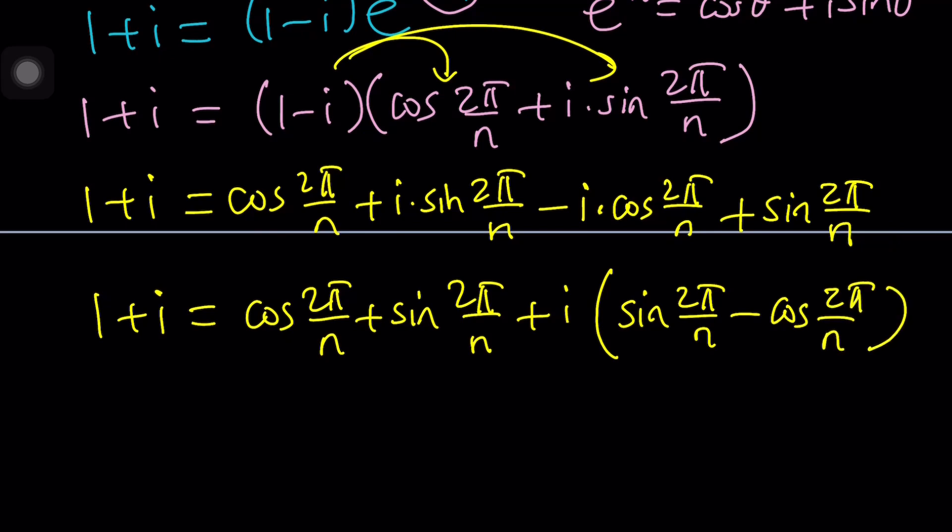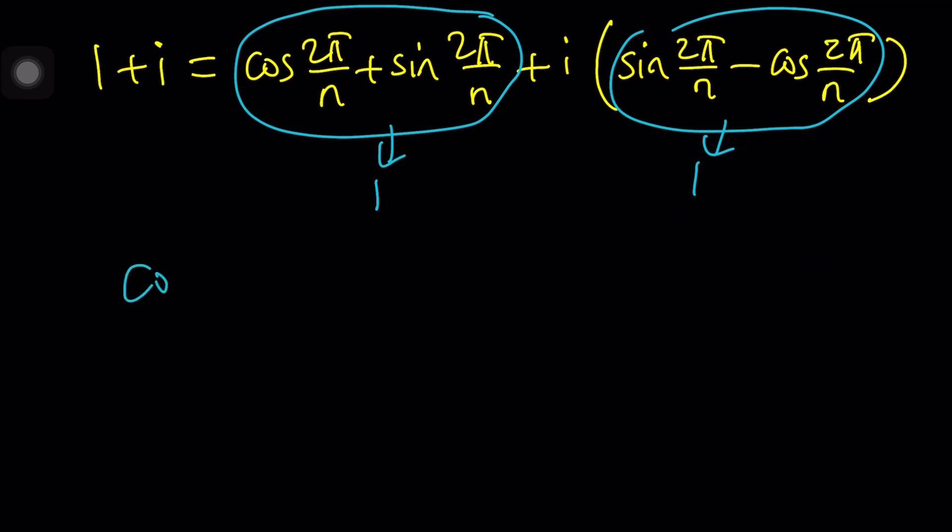We have complex numbers on both sides so we can compare them, right? Let's put the real parts together: cos(2π/n) + sin(2π/n). And then for the imaginary part, we have i multiplied by the quantity sin(2π/n) - cos(2π/n). Now we have 1+i on the left hand side, so the real and imaginary parts are equal, which means this is supposed to be 1 and this is supposed to be 1. That gives us a beautiful system.